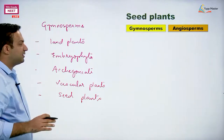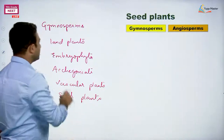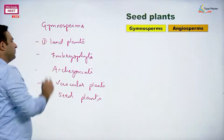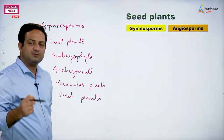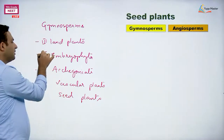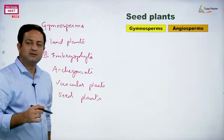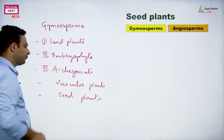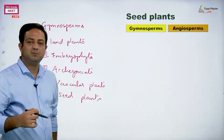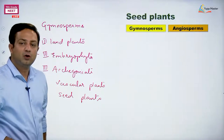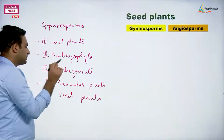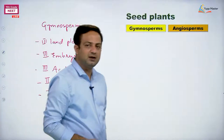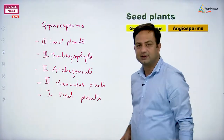Gymnosperms are not the first among land plants — they are third. First was bryophyta, then pteridophyta, third is gymnosperm. Similarly as embryophyta they are third, as archegoniate they are third, as vascular plants they are second, but they are first as seed plants — finally reaching first position in one character.